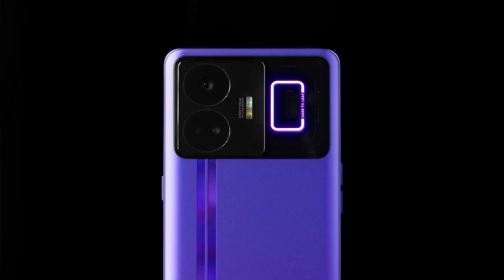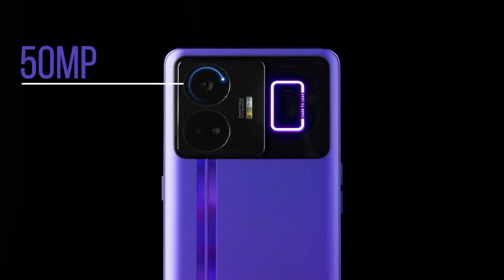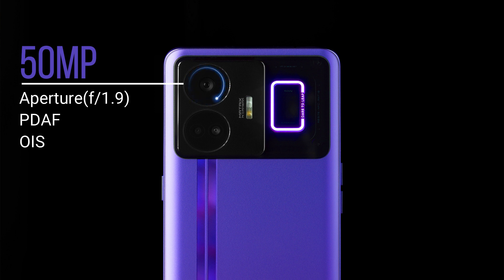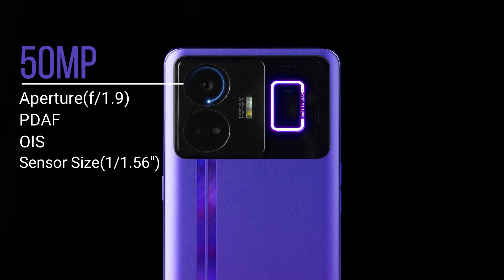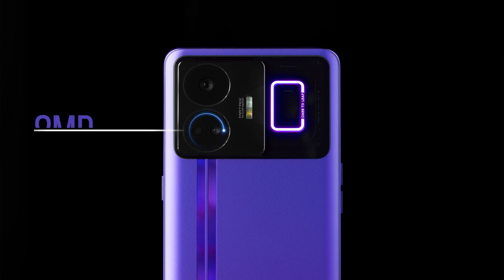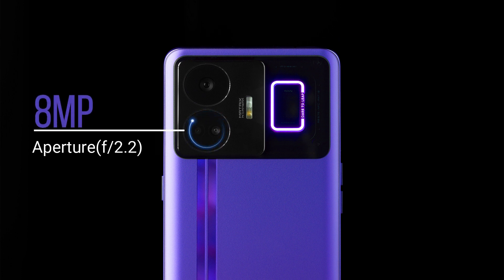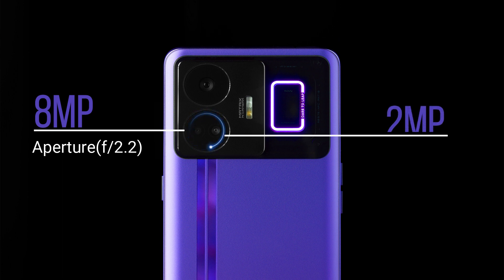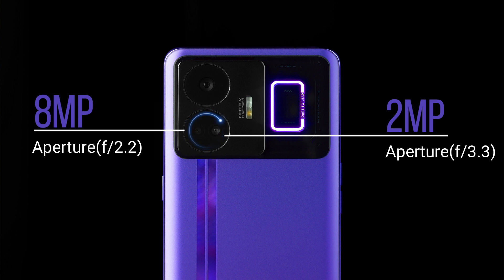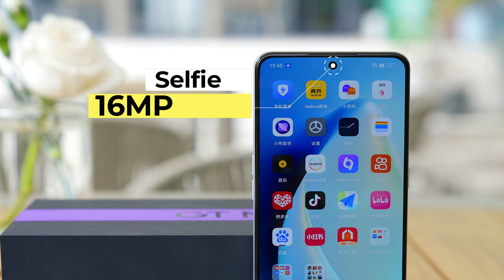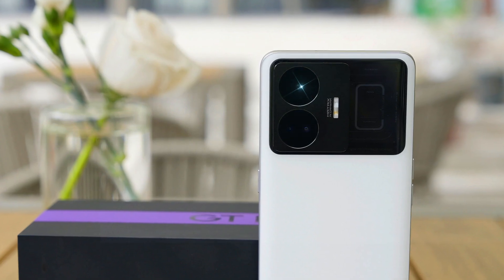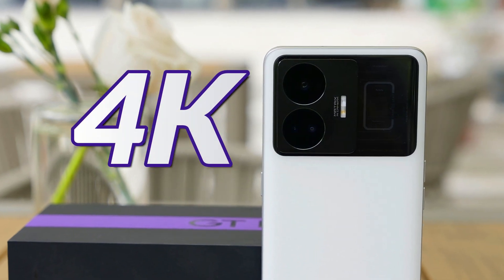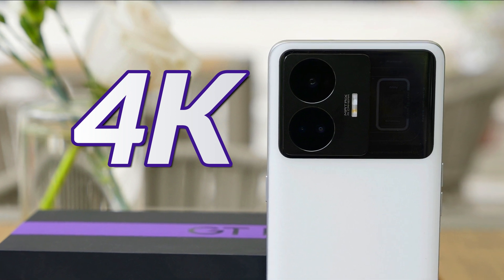If we talk about cameras, it has a main sensor of 50 megapixels with a wide aperture of f/1.9, along with phase detection autofocus and OIS, which helps in capturing clear images by focusing on moving objects. With a large sensor of 1/1.56 inch, you can get good photos even in low light. The second is an ultra-wide sensor of 8 megapixels with f/2.2 aperture, and the third is a macro sensor of 2 megapixels with f/3.3 aperture. It has a central punch-hole camera of 16 megapixels for selfies and video calls, and you can record maximum video of 4K at 30fps from the main camera.